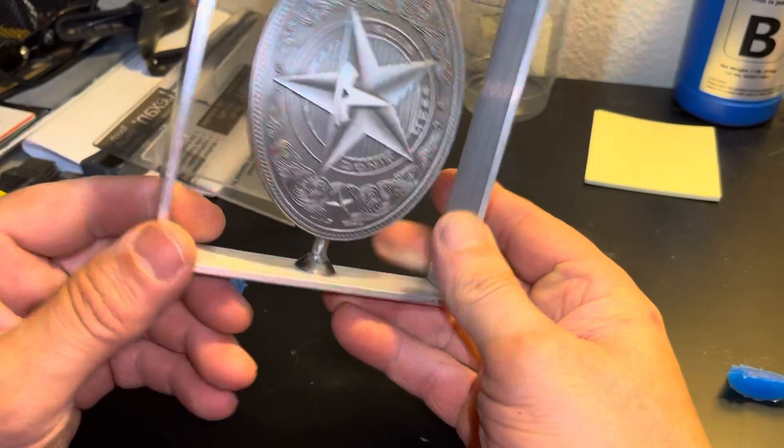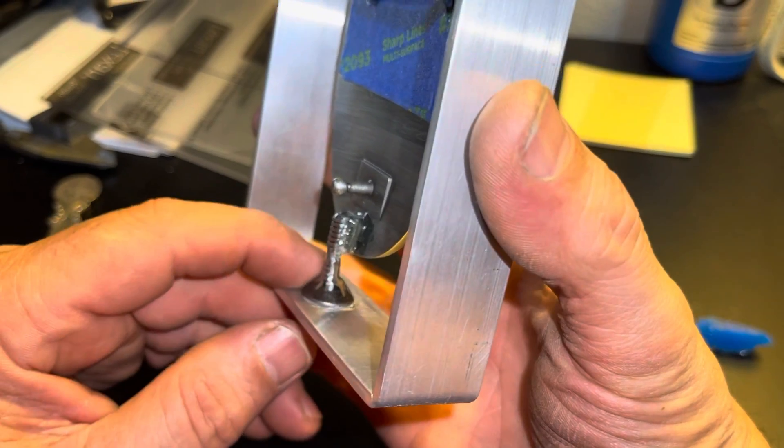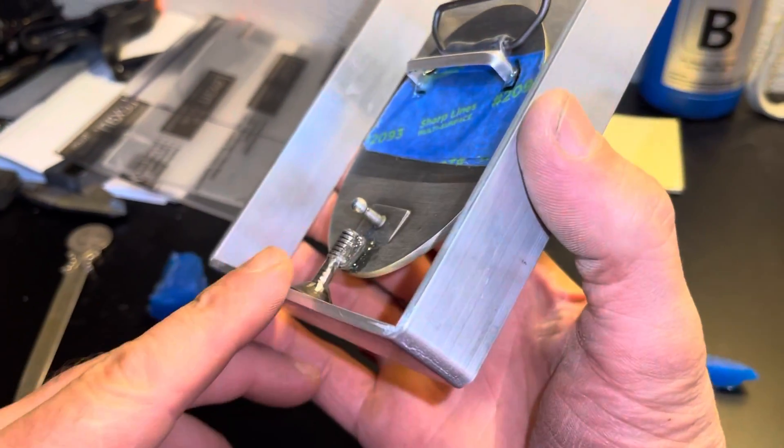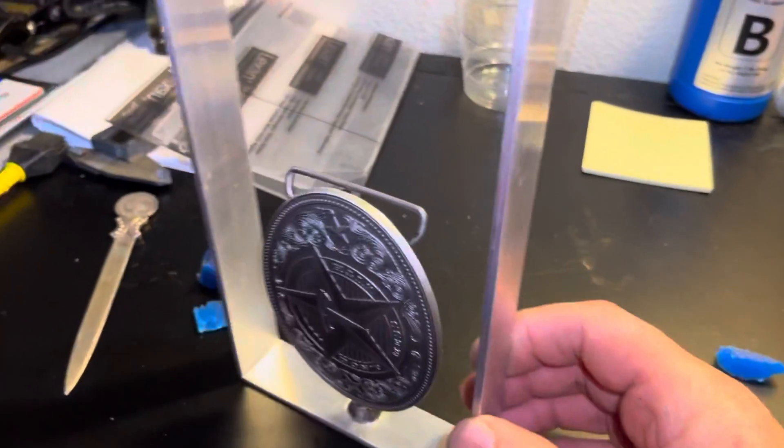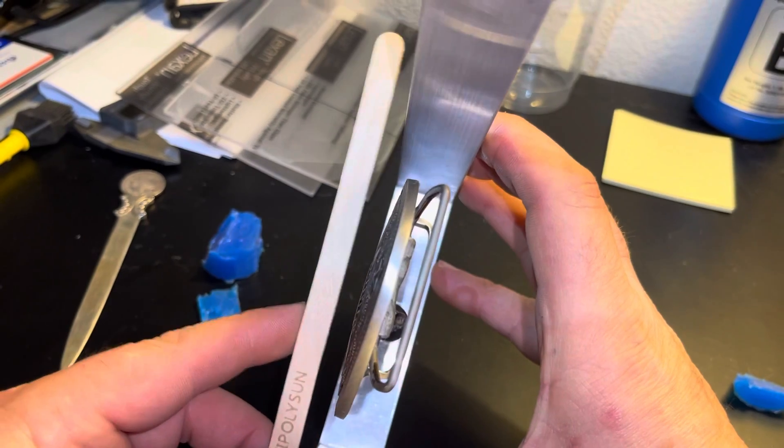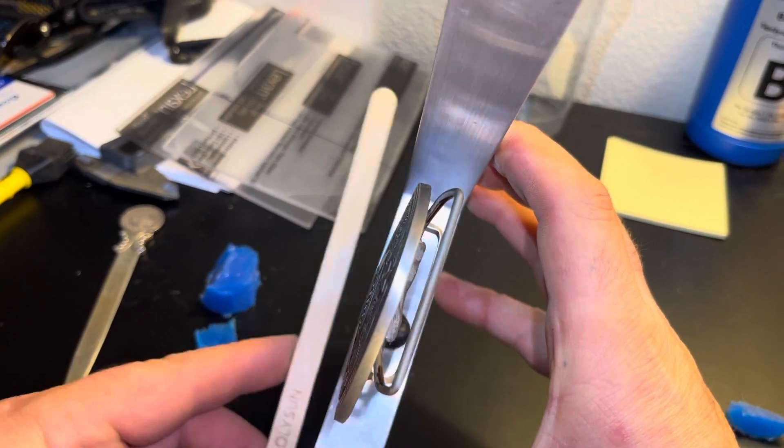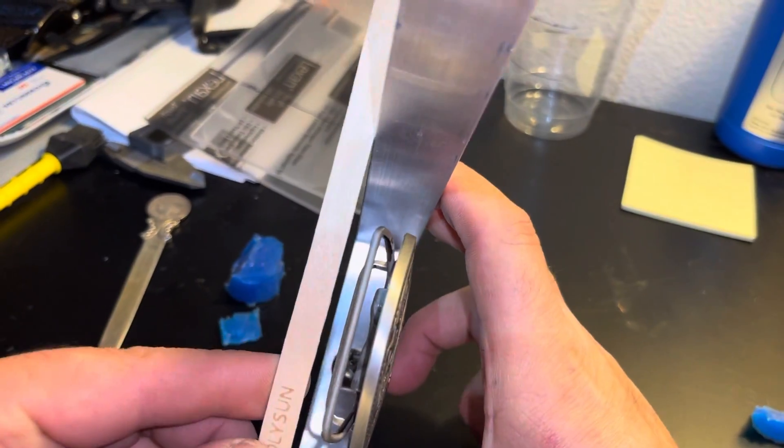But yeah, this should work well. There's a countersunk five sixteenths bolt I used so the injector nozzle will go here. This is not perfect. I wish I had more distance on here from the mold but it should work.